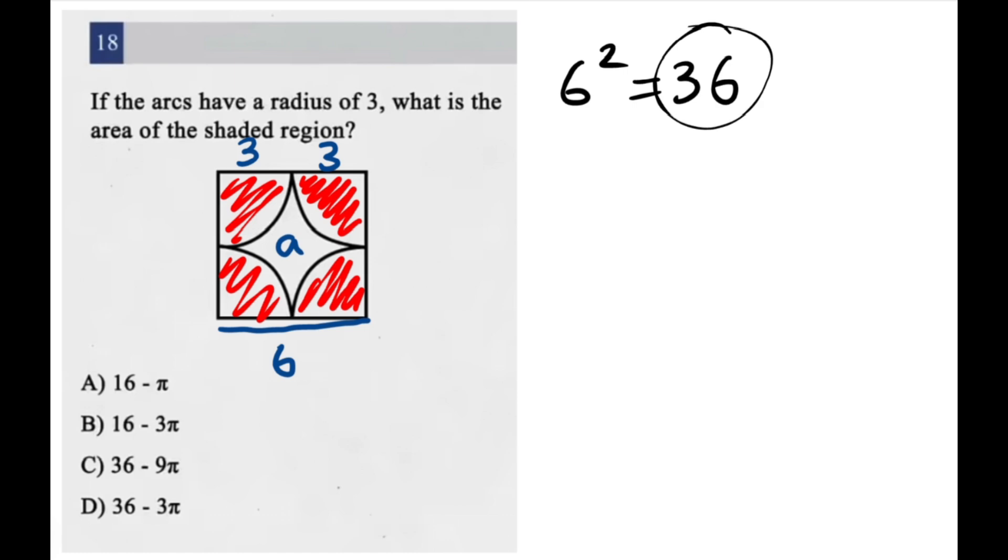Now we need to find the areas of these little quarter circles. Now not only are these perfect quarter circles, but there are four of them. And as you could guess, four quarter circles make a full circle. And the area of a full circle is equal to, let's just name it C because we can't name it A again, is equal to pi times r squared.